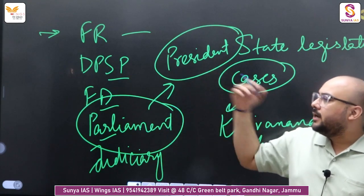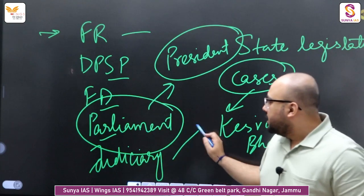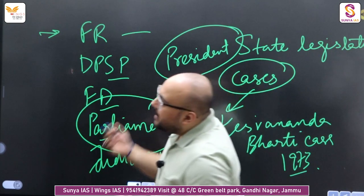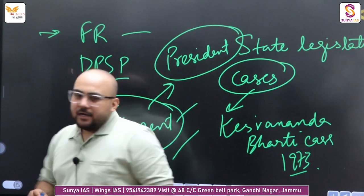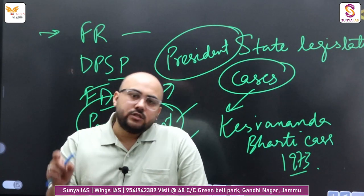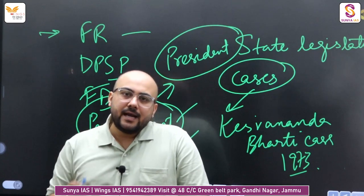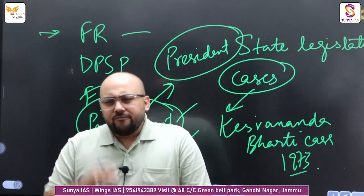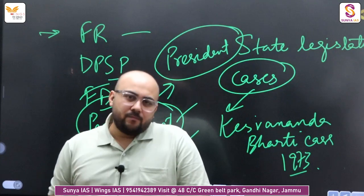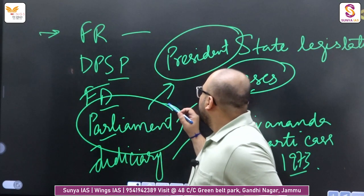Slowly, one by one, step by step, you have to do things. Don't first read fundamental rights and then suddenly jump to Parliament, or skip the preamble and go straight to fundamental duties. Always try to study in a chronological way — study in synchronization. That will be far more easy. Have patience, have faith in yourself, and you will complete it eventually.